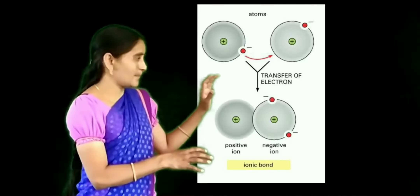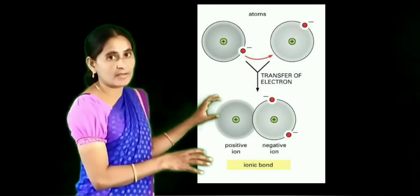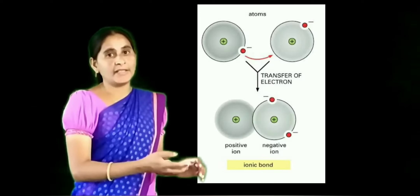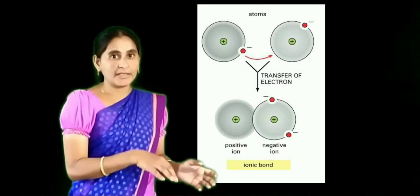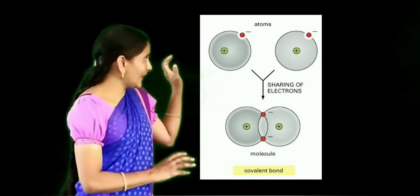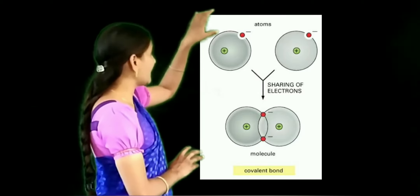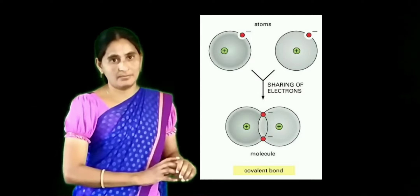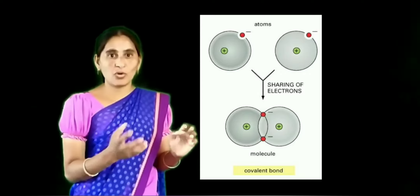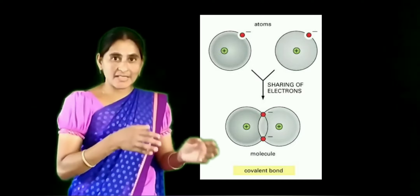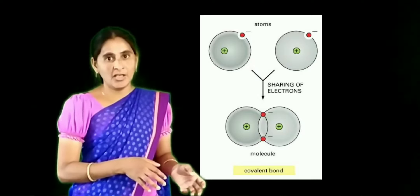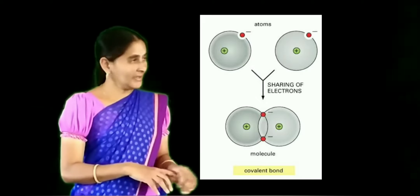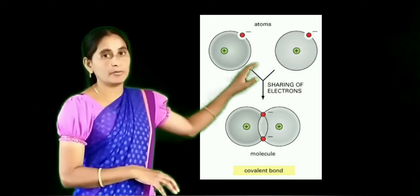In class, we already discussed the dot pictures. Whatever molecule will be given, you have to be ready to draw the dot picture and explain the bond formation. The next type of bond formation we are going to discuss is covalent bond. Co- means equally, valent means necessity. Whichever atoms are having equal necessity will involve in covalent bond.